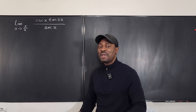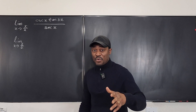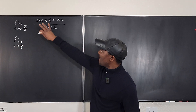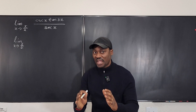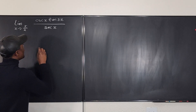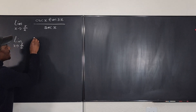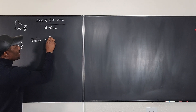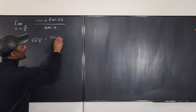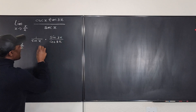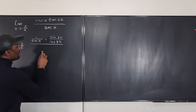Do yourself a favor — rewrite everything in terms of sine and cosine and see if you can make sense of it. We're going to take the limit as x goes to π/2 and write it only in terms of sine and cosine. So cosecant becomes 1 over sine x, and tan(3x) becomes sine(3x) divided by cosine(3x).